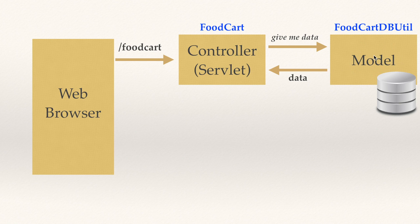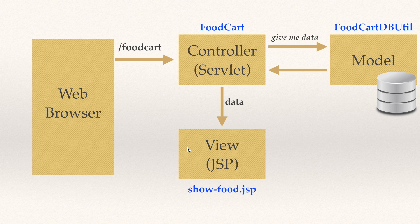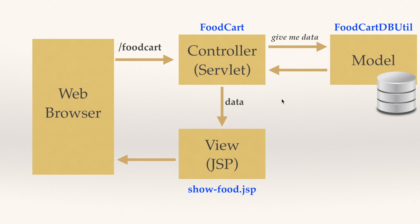To talk to the model I'm going to create a helper class, and my class name will be FoodCatDBUtil. We are going to see how this class works in a later part of the application. Once the controller receives the data from the model, it is going to pass this data to a view — a JSP page — which I'll name showfood.jsp. This is the final page sent to the web browser, because it's the page the user will see. That is the big picture of the application.